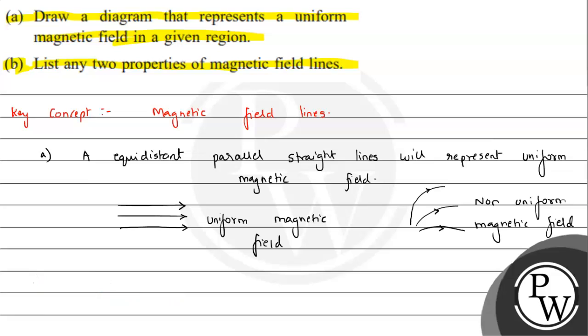So the second part of the question, we have to list properties. First property: they form closed loops. Second point will be they do not intersect with each other.